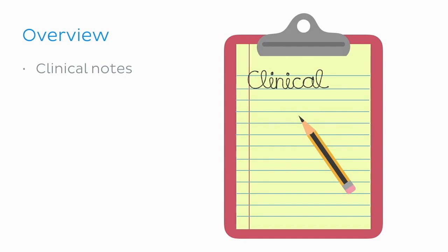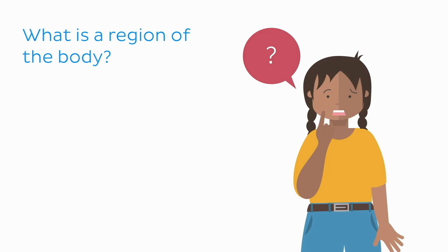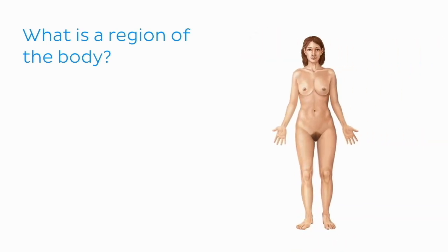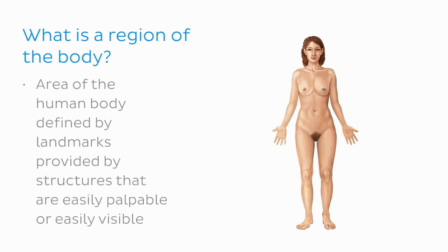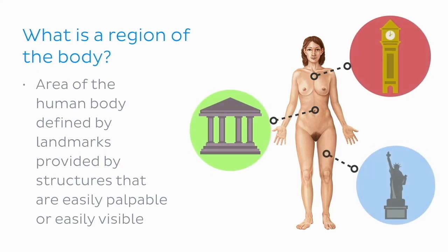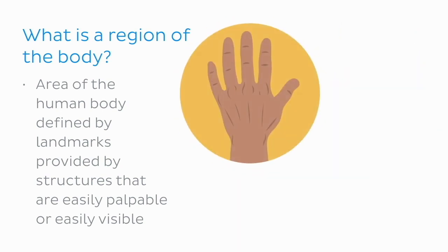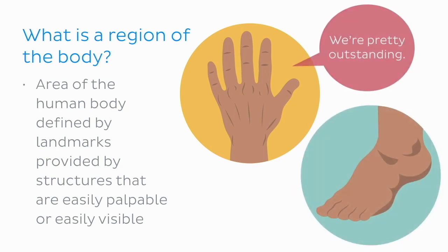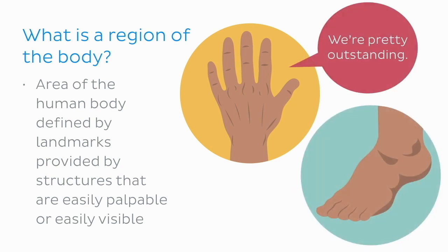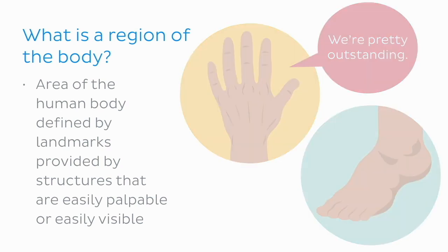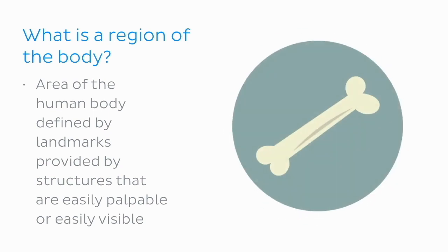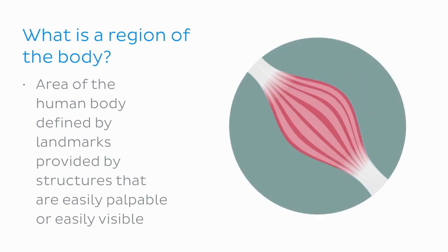What is a region of the body, or an anatomical region? It's an area of the body defined by landmarks provided by evident structures that are easily palpable or visible. To put it simply, it is a part of the body that, because of its shape and form, easily stands out as distinct from the other regions. These shapes are created by various structures found underneath the skin, such as bones, muscles, or ligaments.